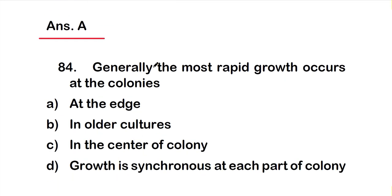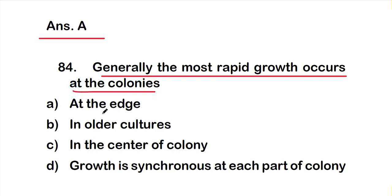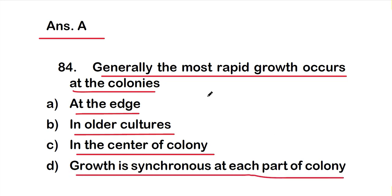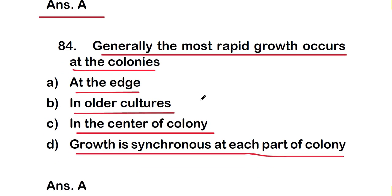Question number 84: Generally, the most rapid growth occurs at colonies — option A: at the edge of the petri plate, option B: in older cultures, option C: in the center of the colony, option D: growth is synchronous at each part of the colony. The right answer is option A — the most rapid growth occurs at the edge of colonies.